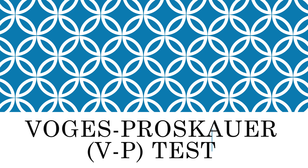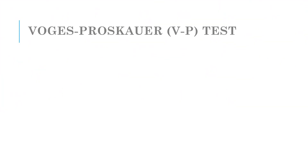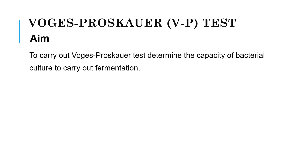This is the third test. Now let's see VP test in detail. Vogel's Prosquer test — this test is also called as VP test. The aim of this test is to determine the capacity of bacterial culture to carry out fermentation. Enterobacteriaceae family carry out formic acid fermentation, which I have explained in detail in my previous video on the methyl red biochemical test.